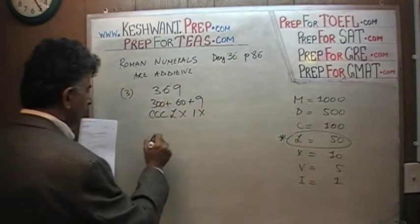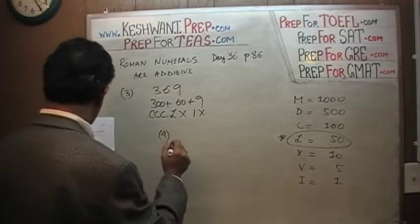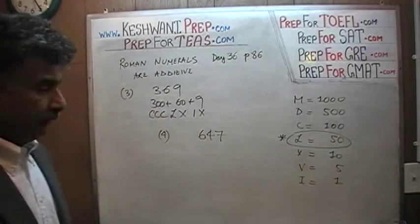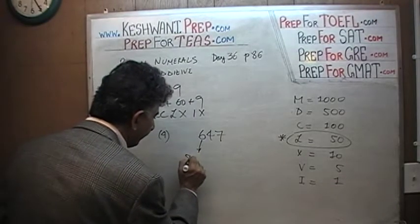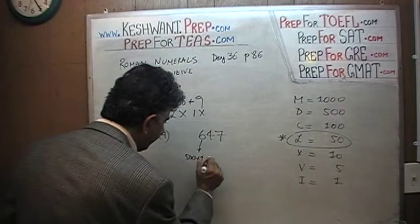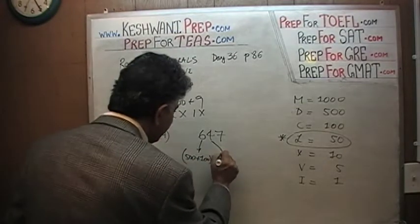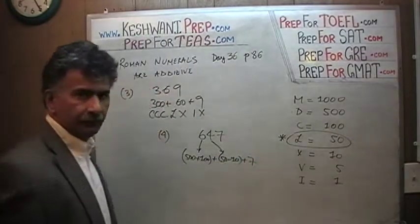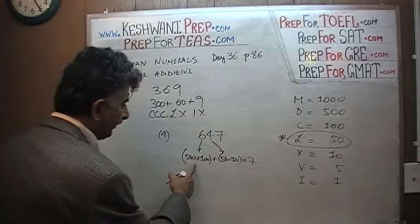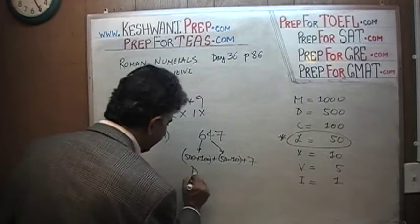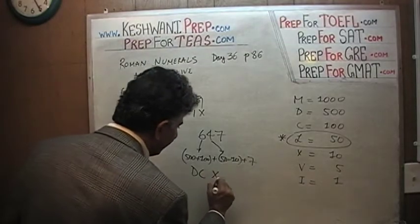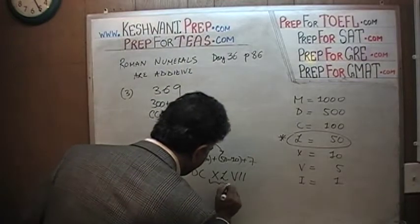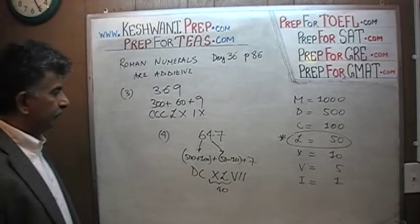Number four: six hundred and forty-seven. Six hundred would be written as five hundred plus one hundred — that's D and C. Then forty is fifty minus ten — so X before L, giving you XL. And finally seven. So: DC for 600, XL for 40, and VII for 7. That's your six hundred and forty-seven.